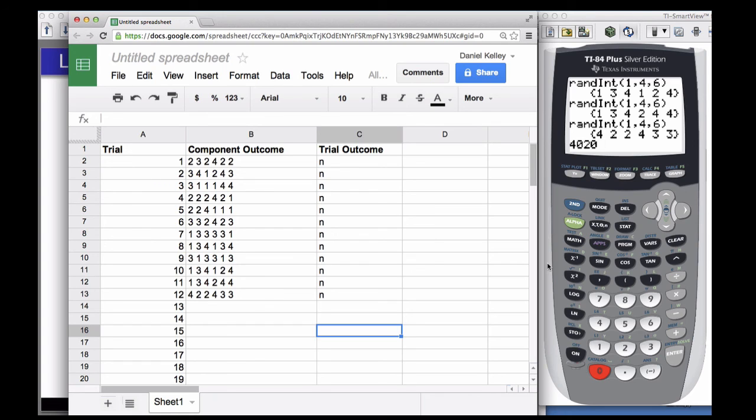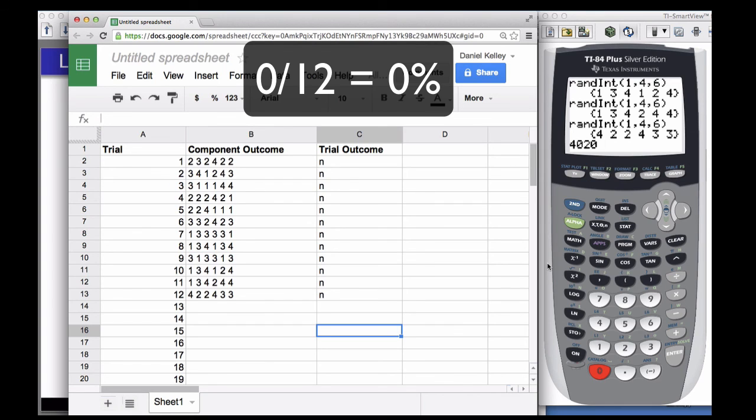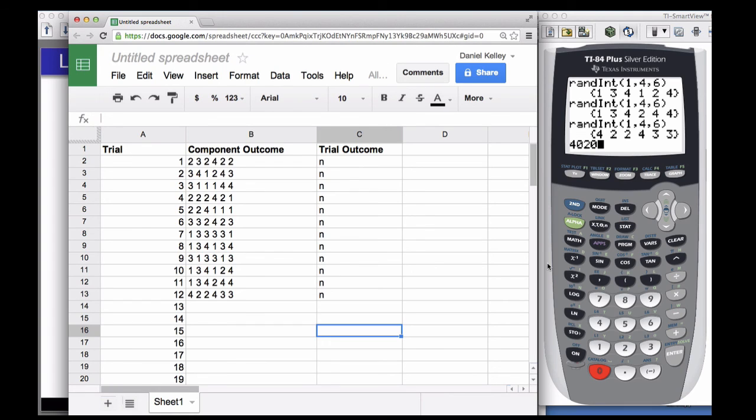So the way that we would answer this question is to say that it is very unlikely that this person guessed on every question on the test and aced it. According to my simulation, the chances of that happening are zero though I think that the actual chances of that happening are not zero so if I wanted to get a good estimate of that probability I would have to run way more trials but at this point I'm willing to say that that person is full of it and they did not guess on every question on the test and ace it.